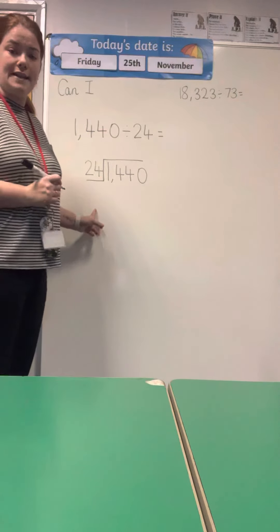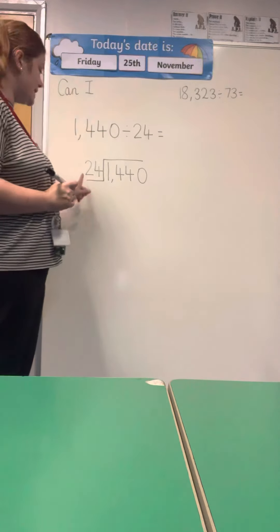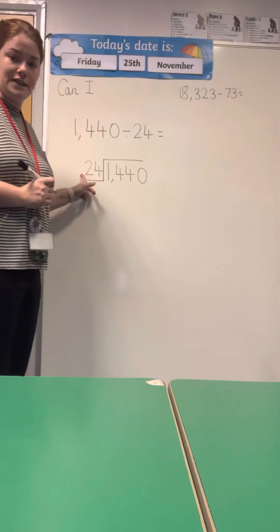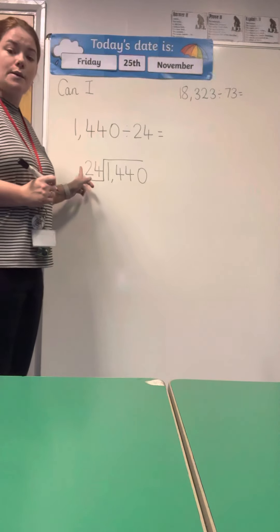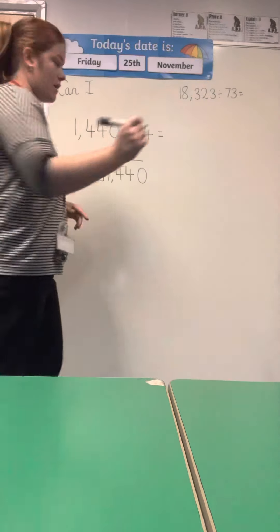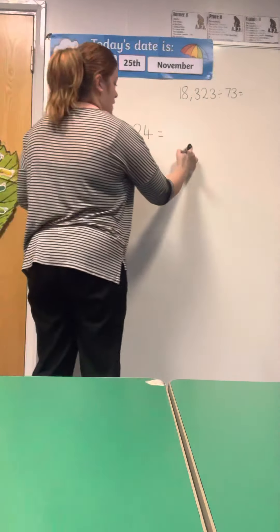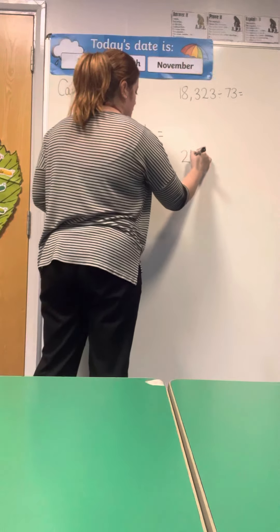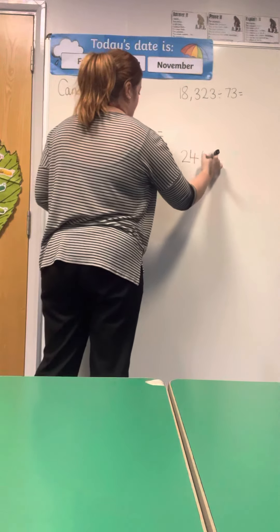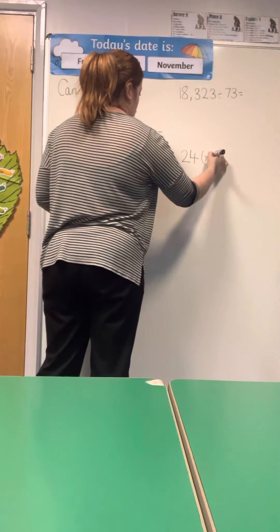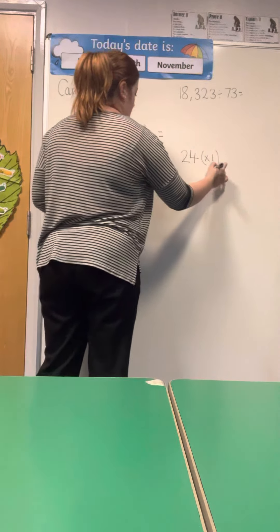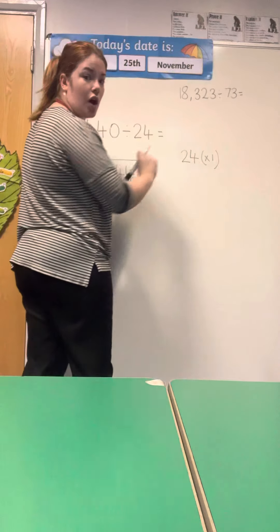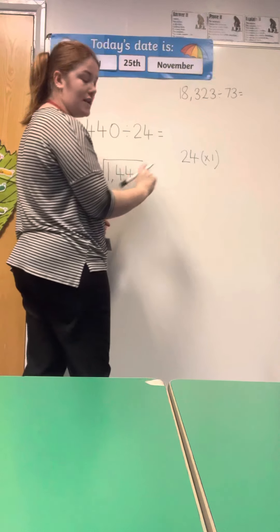The next thing I need to do is work out my multiples of 24, and I'm going to use my partitioning method. So I've got 24 — and in brackets I'm going to put times 1 — because I know that 24 times 1 is 24.